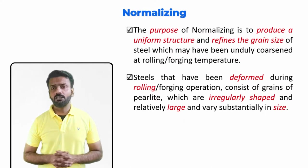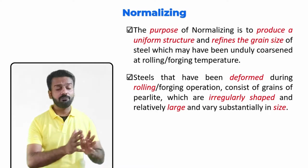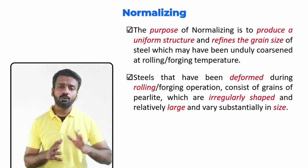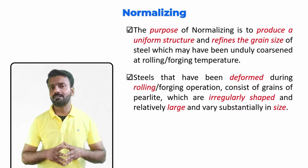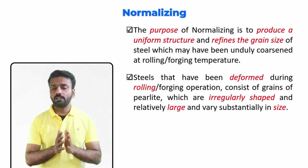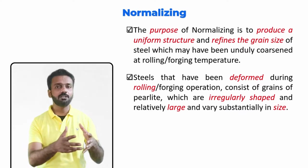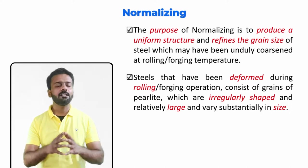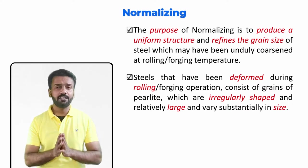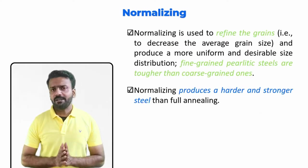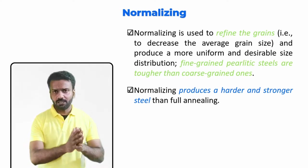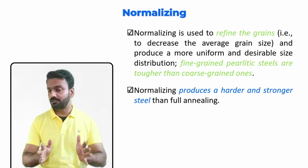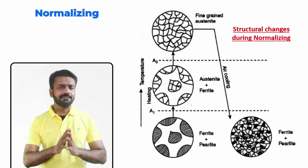The main purpose of normalizing is to achieve a uniform structure and to refine the grain size. Refining means lowering the grain size — producing smaller grains. Steels deformed by rolling and forging operations develop grains that are very irregular in shape and size, which is generally not desirable. Normalizing produces a very fine, refined, and equiaxed grain structure. Grain refinement is also associated with increased hardness, so normalized steel is slightly harder and stronger than annealed steel.